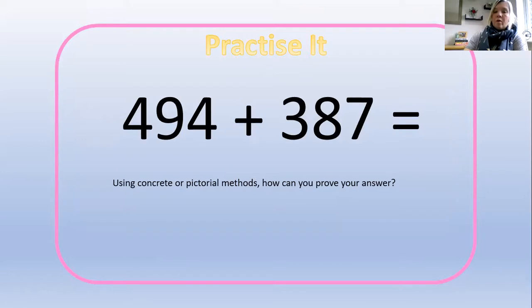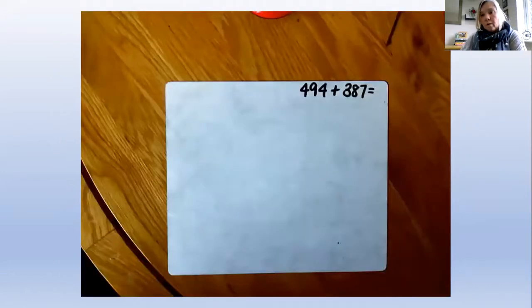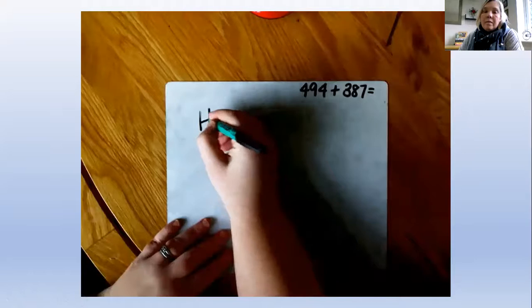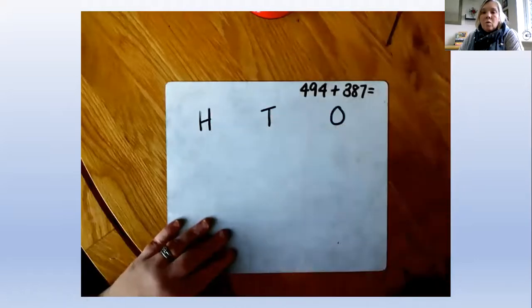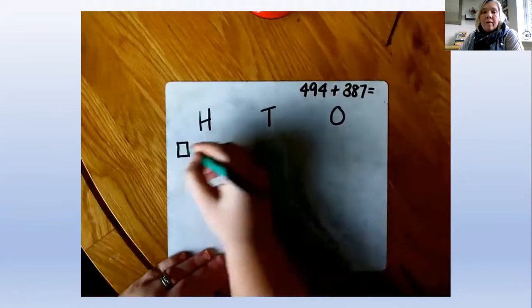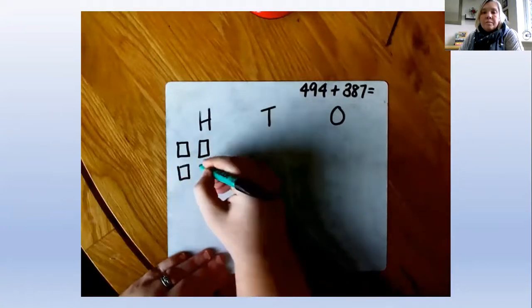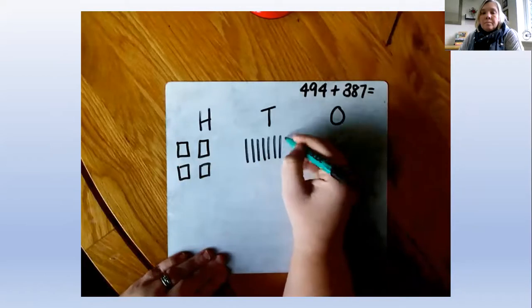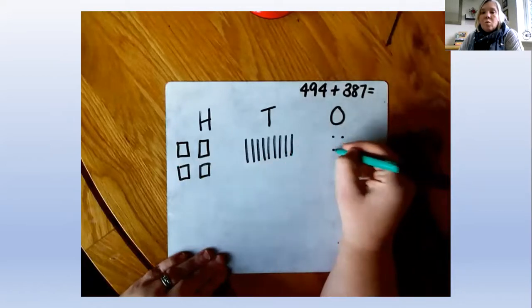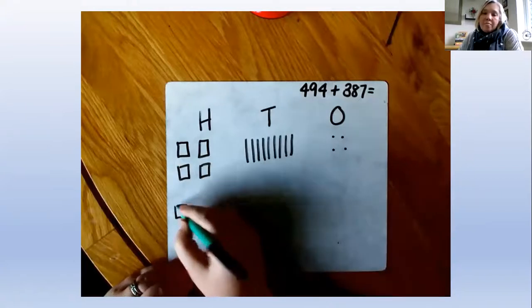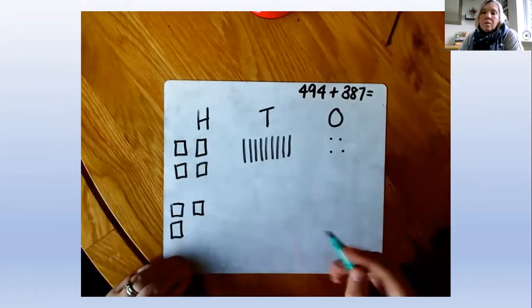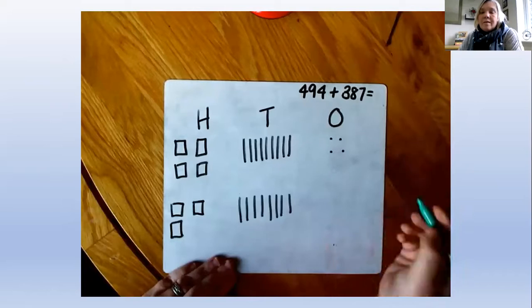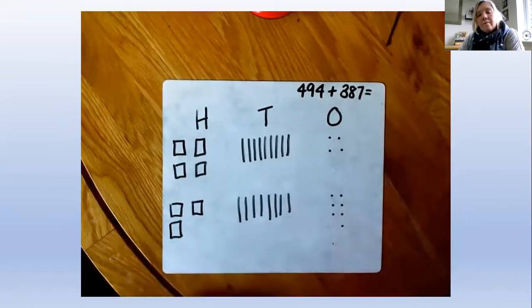Okay, so I've gone for the pictorial. Let's see how I did this. Exactly the same process. We have our 100s, 10s and our ones. We have 4 hundreds, we have 9 tens, 90, and we have 4 ones. We are adding 3 hundreds, another 8 tens, and another 7 ones.